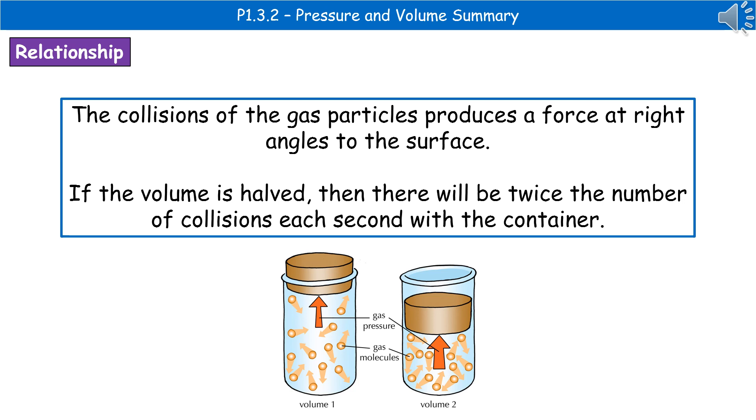When we consider what happens as those gas particles collide with the surface, then they produce that force at right angles to the surface. So if we then think about what's going to happen as we change the volume, if we halve the volume, then what we find is that there are twice the number of collisions each second with the sides of the container.